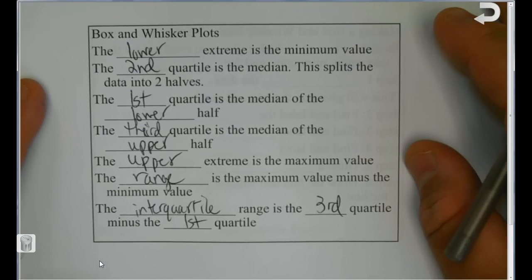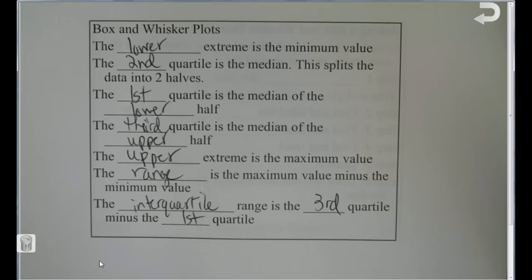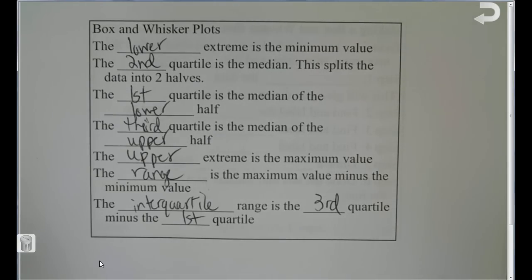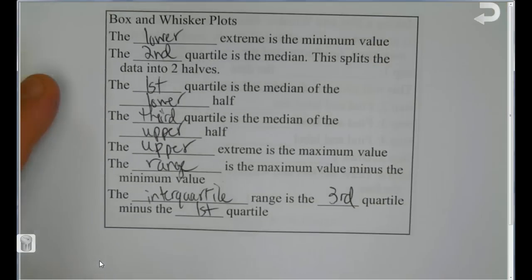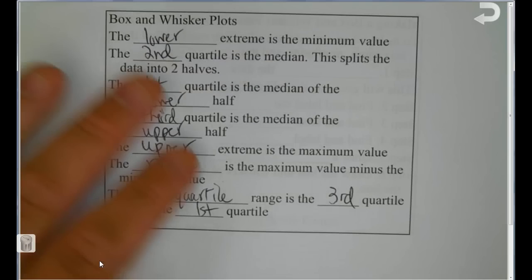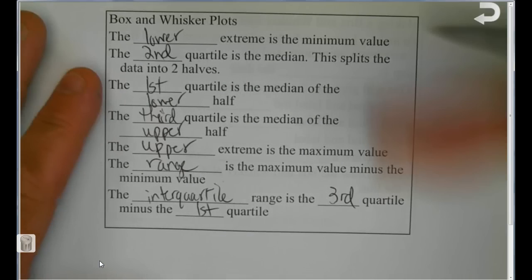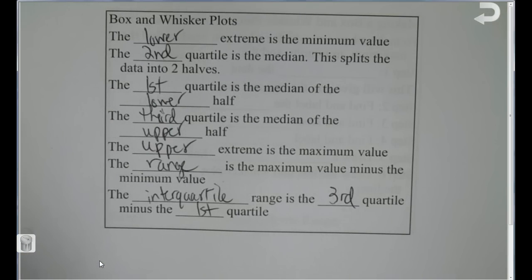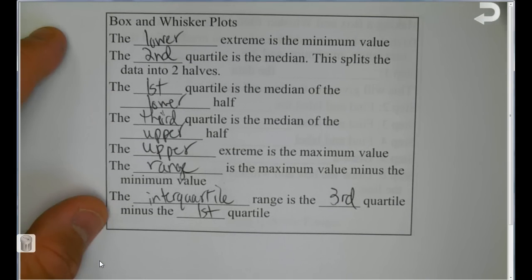To summarize: the maximum and minimum give us the range, and Q3 and Q1 give us the interquartile range. If you need to pause this to get these notes down, go ahead.